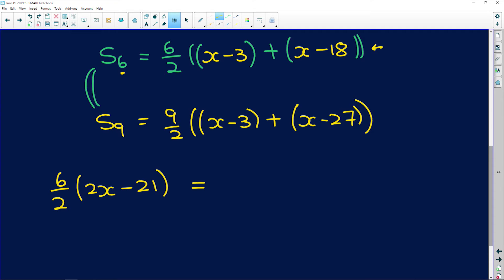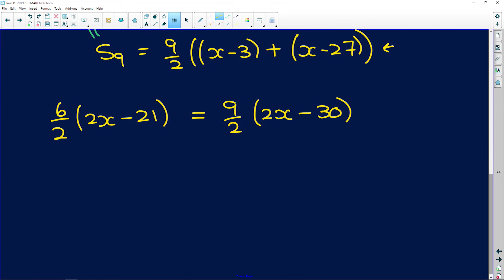Now if we look at the sum to the 9, which is the right hand side, we're going to get 9 over 2 into x plus x is again 2x, and negative 3 minus 27 is negative 30. So now we just keep simplifying. 6 over 2 is the same as 3, we might as well just write this as 3 here. So 3 times 2x is 6x, and 3 times 21 is 63.